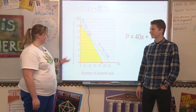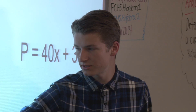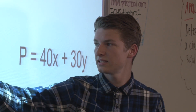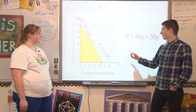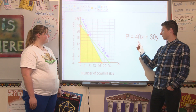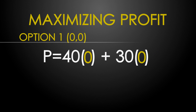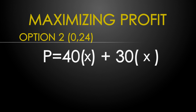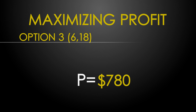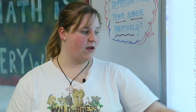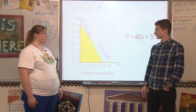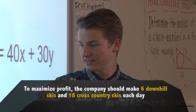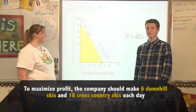By graphing your inequalities we can see that this is our feasible region. The four vertices are (0,0), (0,24), (6,18), and (18,0). And your profit objective function should have been P equals 40X plus 30Y. By plugging in these coordinates you should have gotten $0, $720, $780, and $720. You can see that at (6,18) we have a maximum profit of $780. This means that they should make six downhill skis and 18 cross-country skis each day to maximize their profit.